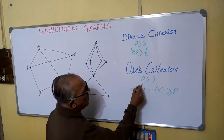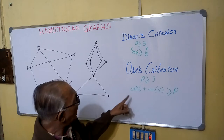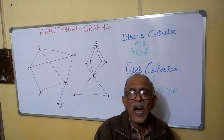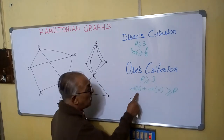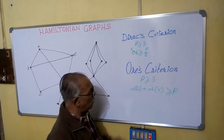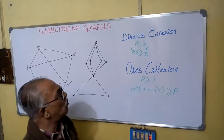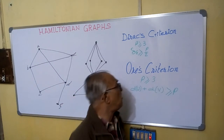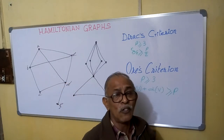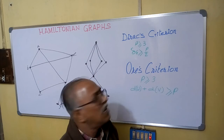Another criteria states that for a graph containing three or more vertices, that is P is greater than or equal to 3, for any two non-adjacent vertices U and V, if degree of U plus degree of V is greater than or equal to P, then it will also be a Hamiltonian graph. Remember, if a graph does not fulfill this criteria, we cannot say it is non-Hamiltonian.